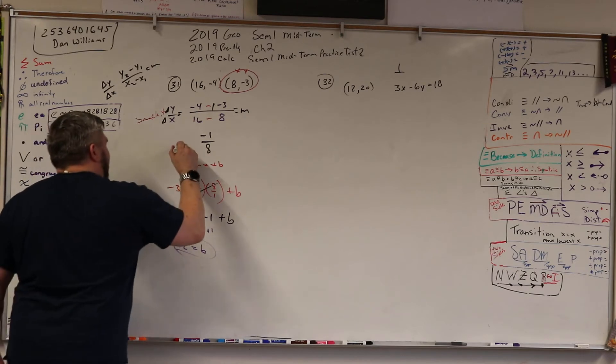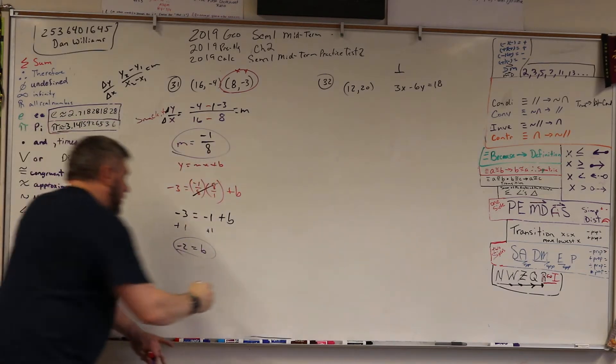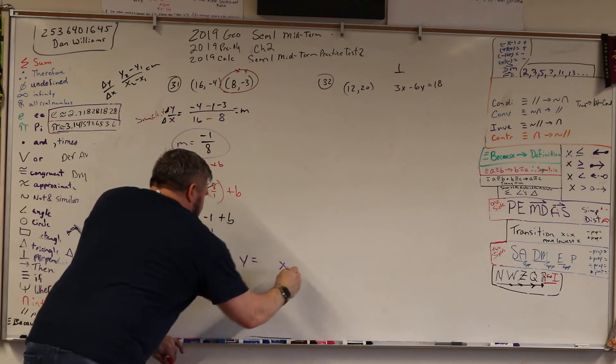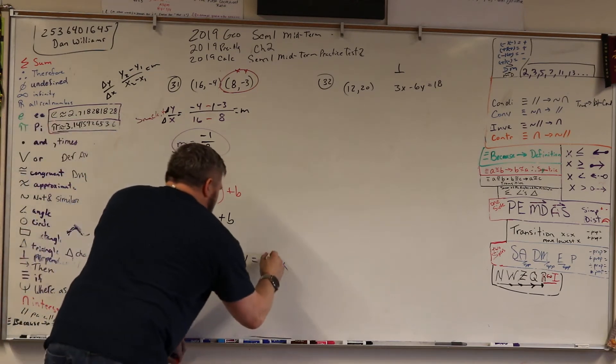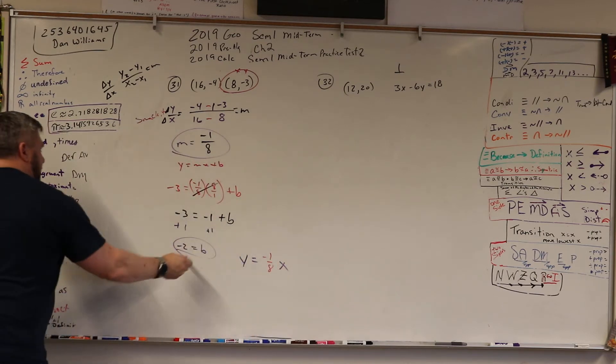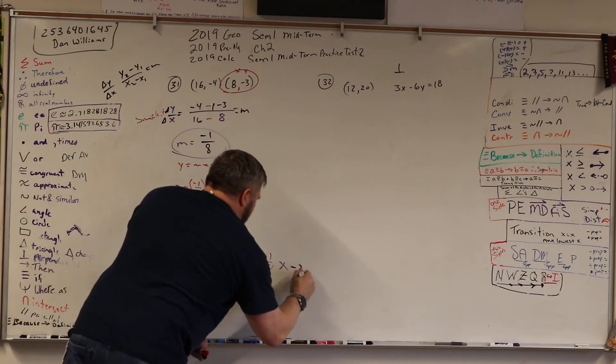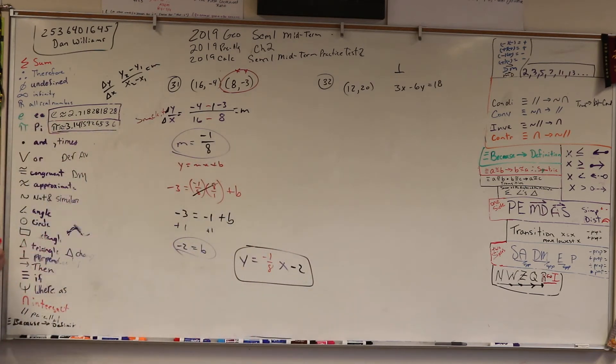Once I have b and I have m, then I have y equals x, whereas my m is negative 1/8, and my b is minus 2. And that's the equation of a line.